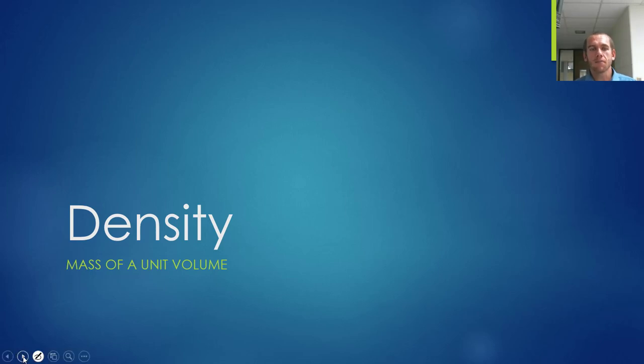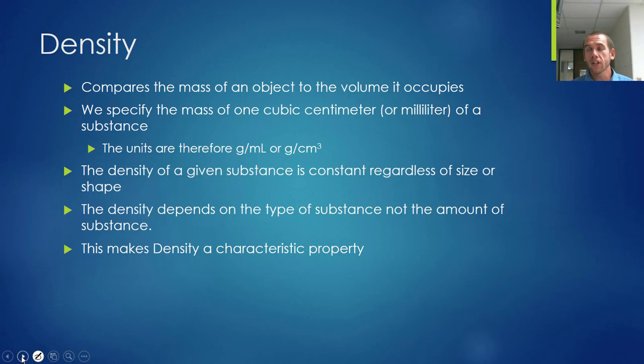In this unit we're going to take a look at density, which is the mass of a unit volume. We'll look at that in a little more detail. So density compares the mass of an object to the volume it occupies, which means density is going to be calculated by taking mass divided by volume. So even though we specify this for a unit volume, we can use it for any mass and volume as long as we do that division.